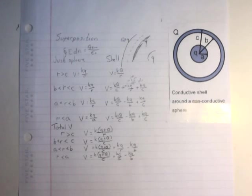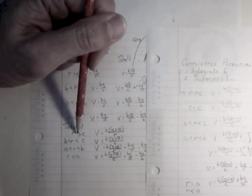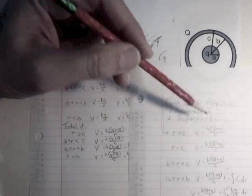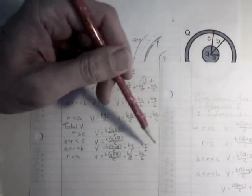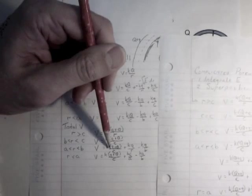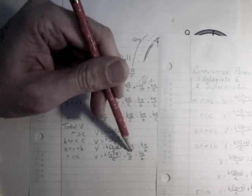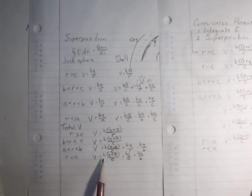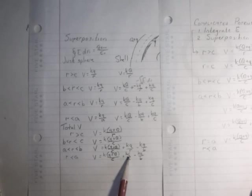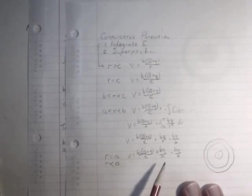Let's go back and let's see how that compares to what we just did. Here are my results from before. So at R greater than C, K Q plus Q over R. Check. At B less than R less than C, K Q plus Q over C. Check. And then at A less than R less than B, K Q plus Q over C plus K Q over R minus K Q over B. And that's what we get there. And this was done by integration. And then this one, by superposition, R less than A, K Q plus Q over C plus K Q over A minus K Q over B. There it is.